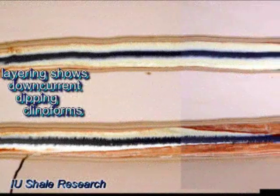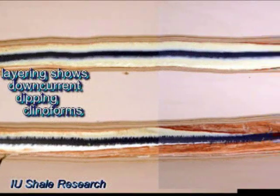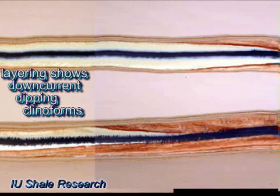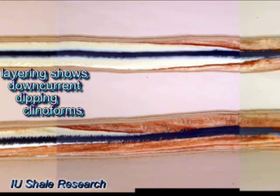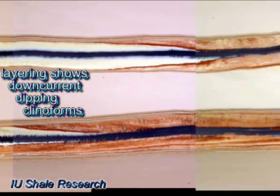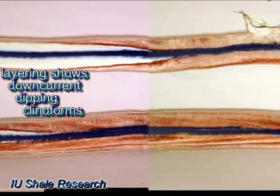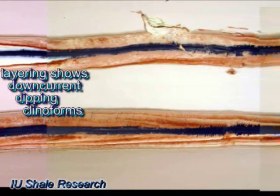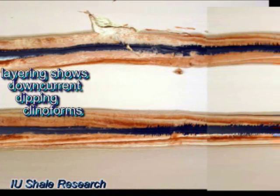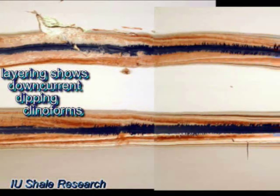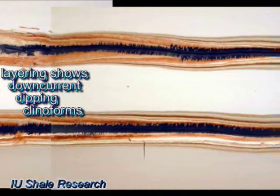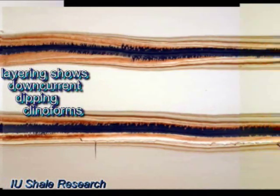Once dried to a soft butter consistency, we can scrape open the clay bed and observe the internal layering. We see down-current dipping clinoforms that record lateral migration of ripples.